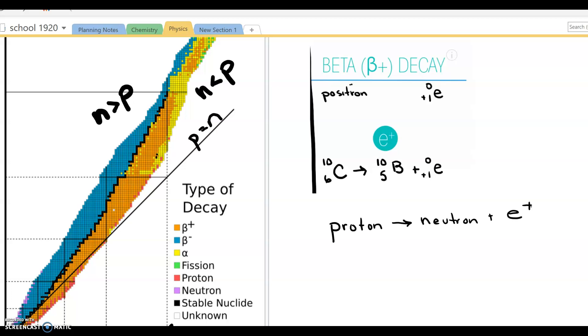It's a positron. The mass is equivalent to that of an electron, but the charge is completely the opposite. Something new to think about. But the beta plus decay is not usually highly common, but it does occur.